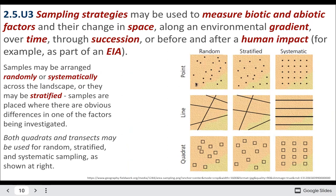We could do a random sampling, where we randomly choose where to put our points, randomly choose where to do our line transects, or randomly choose where to put our quadrats. Or we could do the opposite and use a systematic method, where we sample at regular intervals — either lines at regular intervals or quadrats at regular intervals.